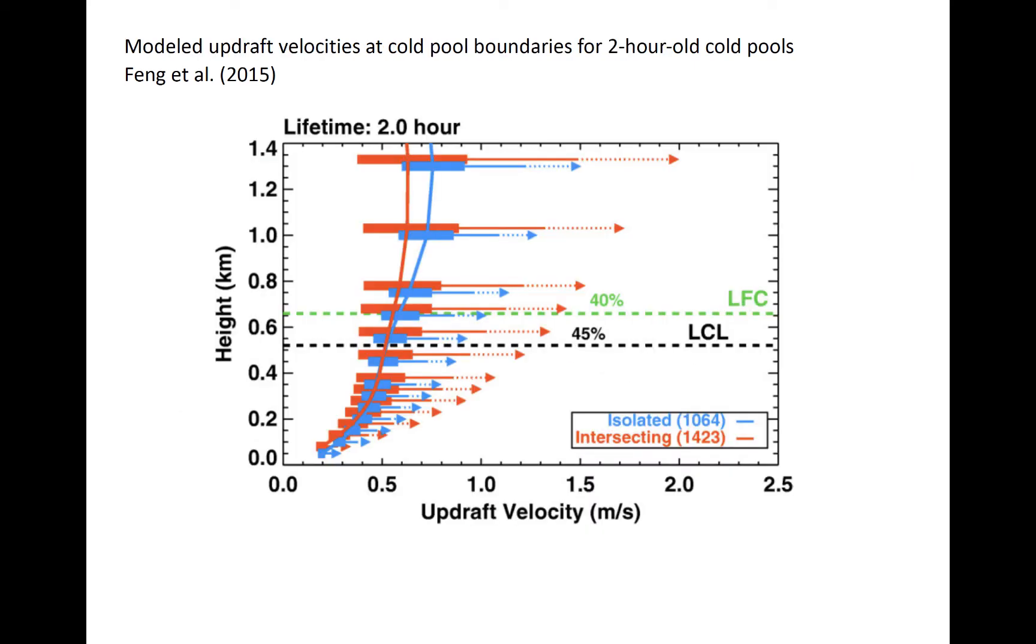The typical updraft velocities along simulated tropical cold pool boundaries is shown here. The average updraft velocities in isolated versus intersecting cold pools are similar, denoted by the lines and the boxes, which indicate quartiles. However, the blue arrows and the red arrows denote extreme events. The strongest intersecting cold pools are stronger than the most intense updrafts in isolated cold pools. Therefore, the most intense convection that is triggered by cold pools typically occurs where two or more gravity currents collide.